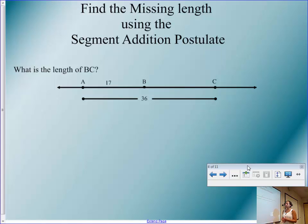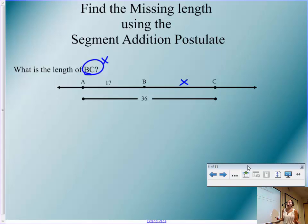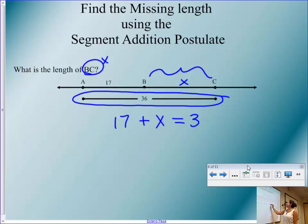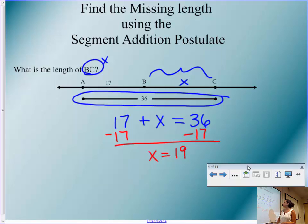Go ahead and take a second, pause this, write it down, see if you can figure out what's going on. We're going to represent VC with the variable X. So we know part plus part equals the whole thing. Part one is 17. Part two is X — we don't know it yet. The whole thing is 36. So now we have the algebraic equation 17 plus X equals 36. Hopefully you subtracted the 17 and got X equals 19. So VC — notice there's no notation over top of it — the distance of VC is equal to 19.